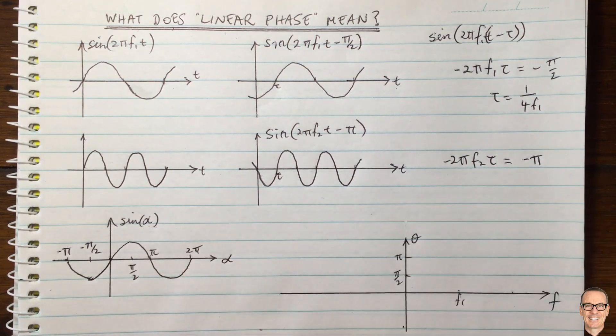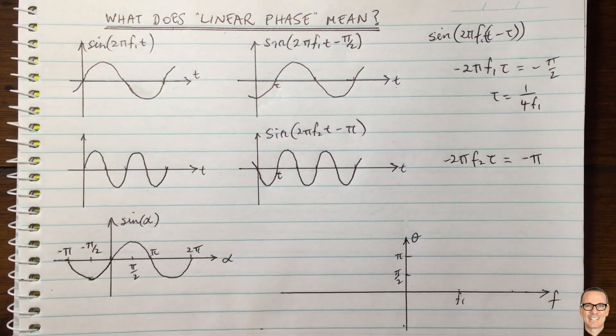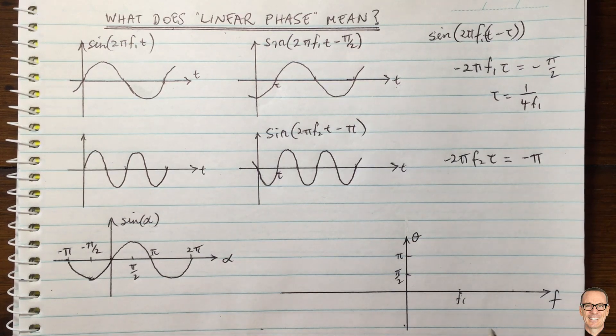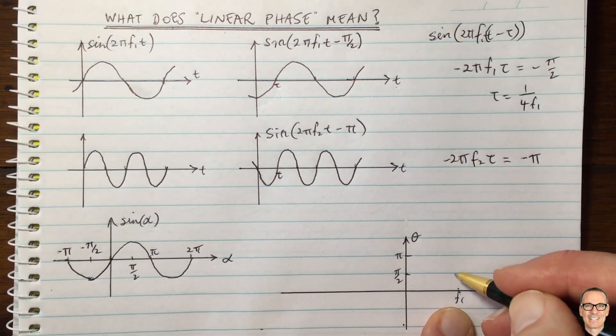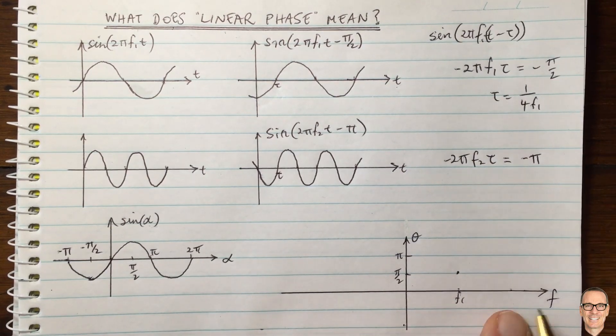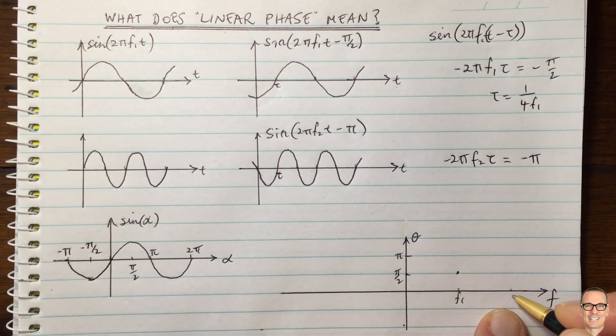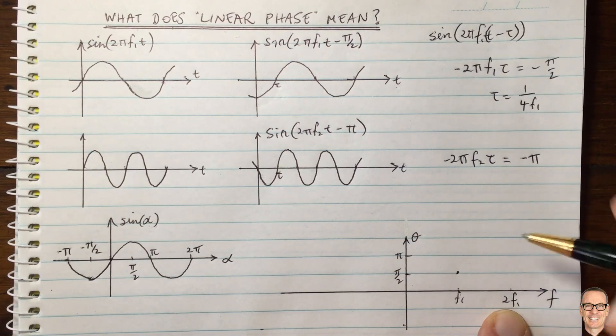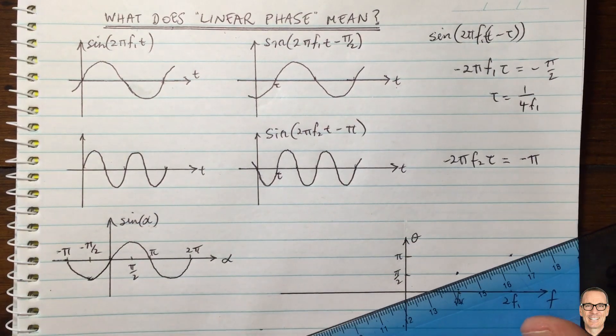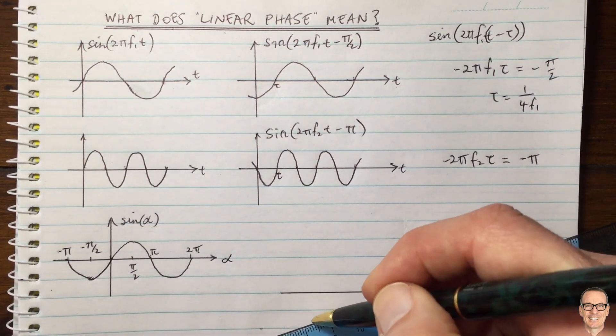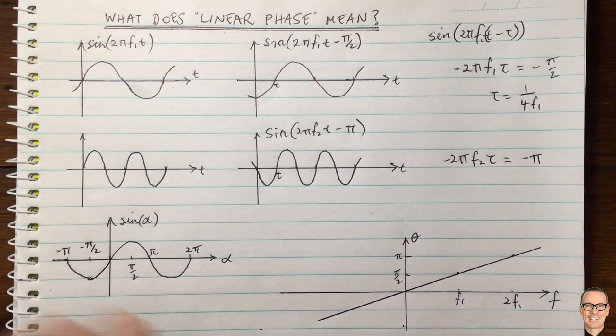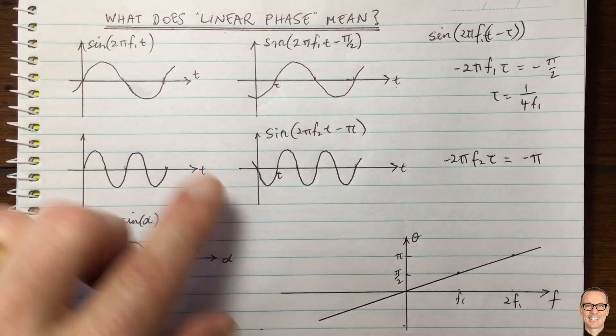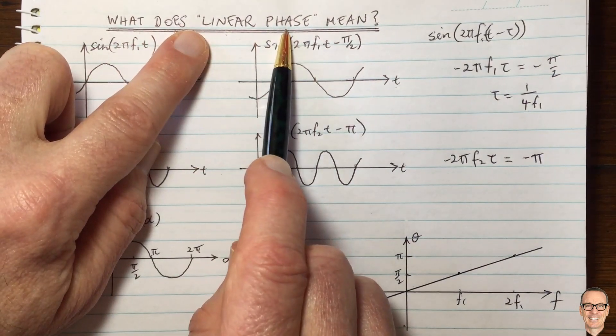And so if we plot that on a frequency versus phase plot, we go to f1, f1, f1 was delayed by pi on two. So that's this point here, f2, which was twice f1. So this is two f1, that was delayed by pi, which is here. And we can see what we straight away from here, that this is going to hold for any other function in between those frequencies as well, or any other frequency. And so this is where we get the concept of linear phase.